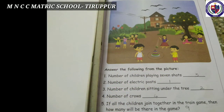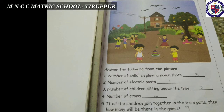See the picture. The children are playing here. Answer the following from the picture. Question number one: number of children playing seven shots — three. Question number two: number of electric posts — one. Question number three: number of children sitting under the tree — two. Question number four: number of crows — four. Question number five: if all the children join together in the train game, then how many will be there in the game? Nine children.